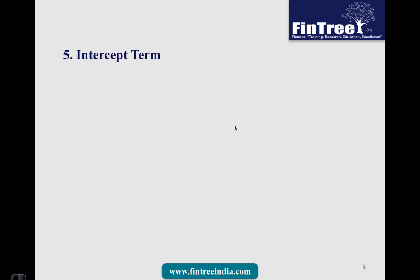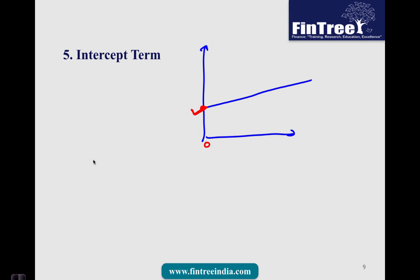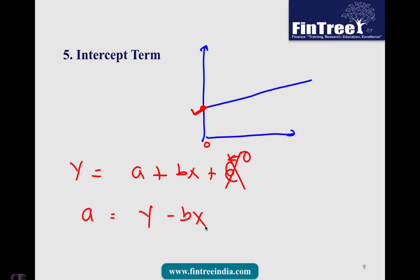Next is the intercept term — this is more of an interpretation than a strict formula. In a simple regression, the intercept is the point where the regression line crosses the y-axis, meaning when x equals 0, this is the value of y. The standard equation for simple regression is y equals a plus bx plus an error term, and since we generally assume the error term is 0, y equals a plus bx. We can rearrange this so that the intercept equals the predicted value of y minus b times x.